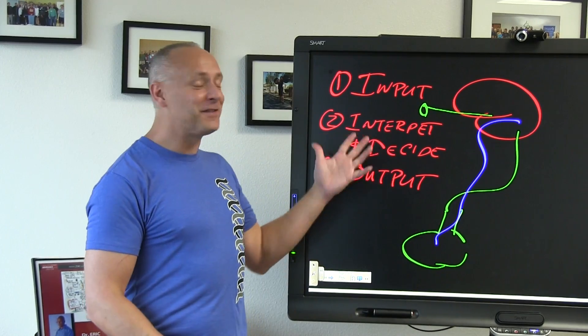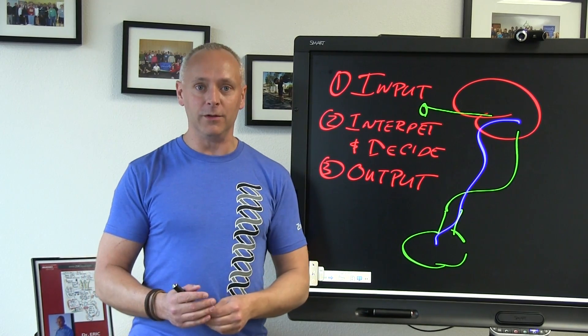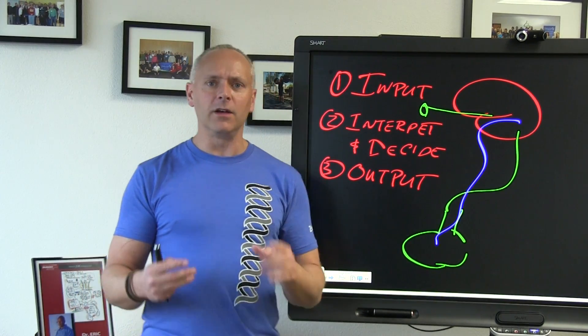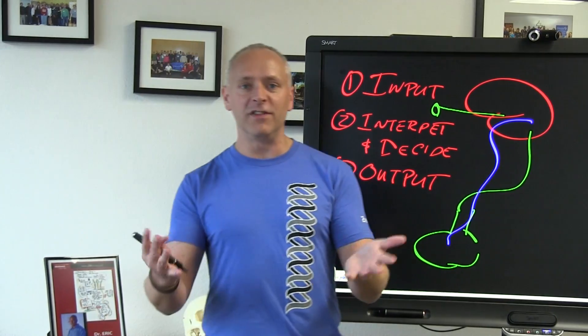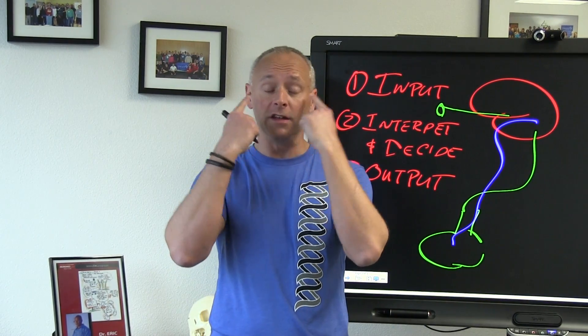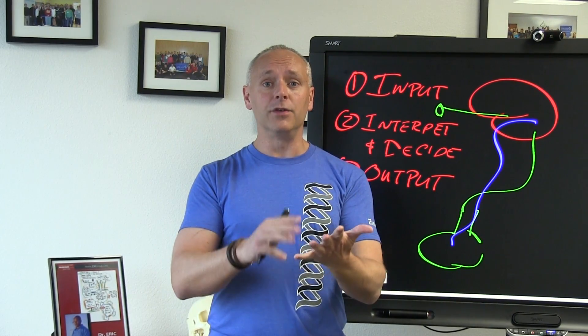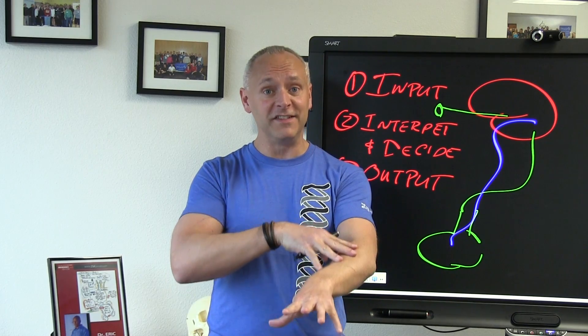So, as simple as I make that sound, hopefully, this starts to explain why we do what we do. Because if I look at the human body, I go, okay, what are the different ways that I can receive input? I can get it through my eyes. I can get it through my inner ear. I can get it through my muscles, my tendons, my ligaments, my skin.